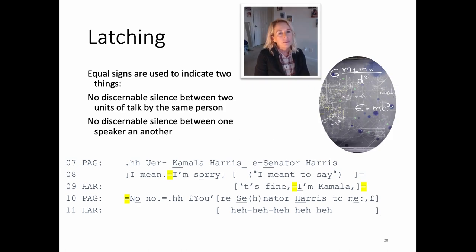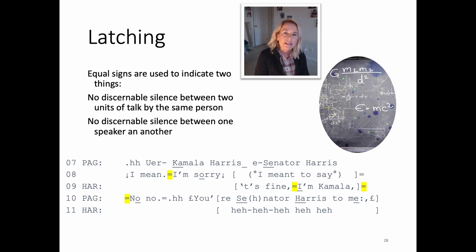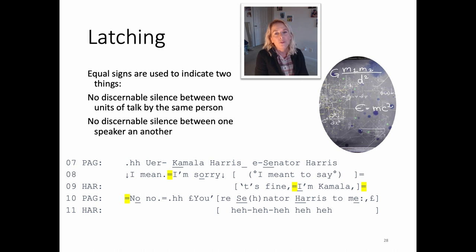This clip also has a lot of latching in it. Latching refers to the normative expectation discovered in CA that between one unit of a turn and another, or between one turn and another, there will be a very slight amount of silence — usually between 0.1 and 0.2 of a second. This has been referred to as the 'beat of silence' between units of talk. Latching can also occur within the same speaker's turn, where they're rushing through to get extra units into their talk.